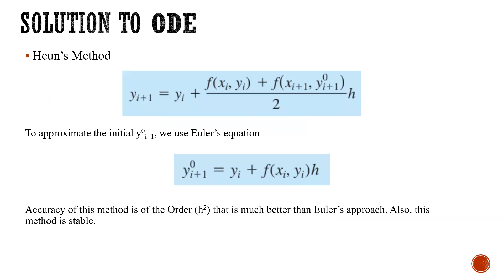Next is Heun's method. It is a combination of the previous methods which contains both initial points and the final points to approximate the next point. y_{i+1} equals y_i plus [f(x_i, y_i) plus f(x_{i+1}, y_{i+1})] divided by 2, times h.